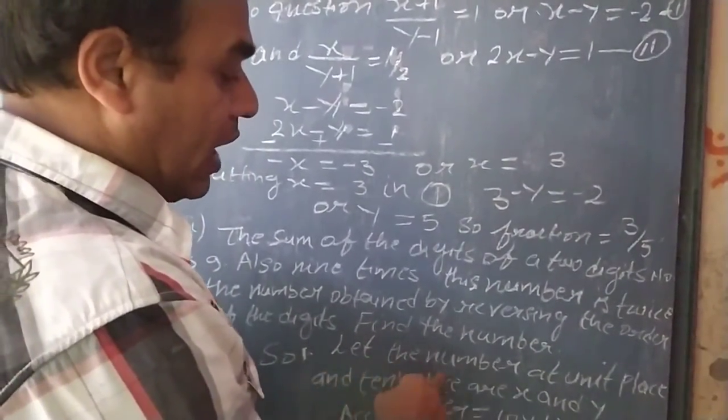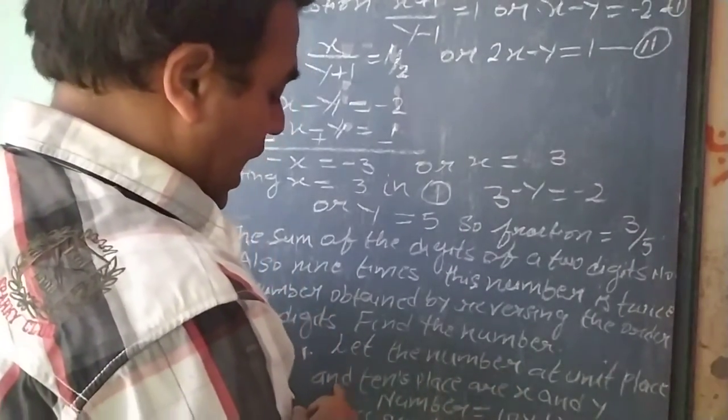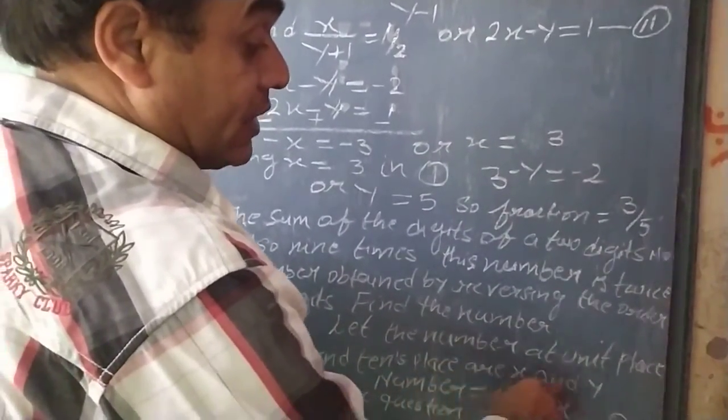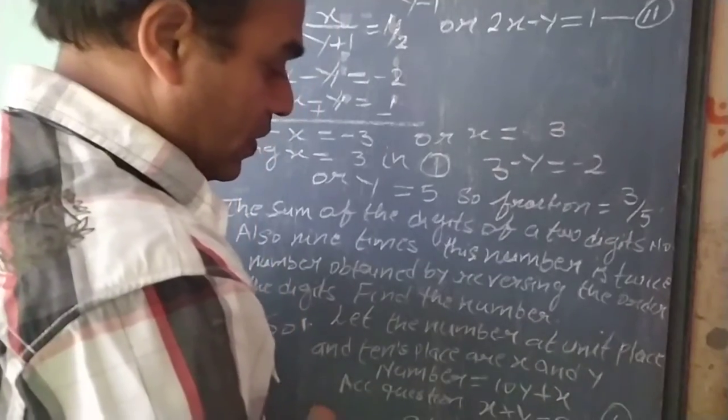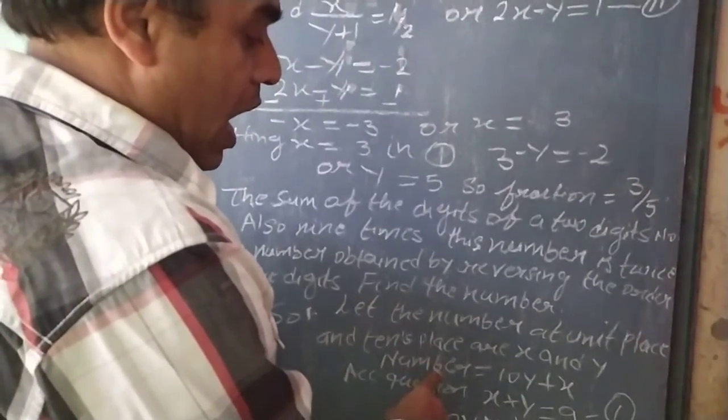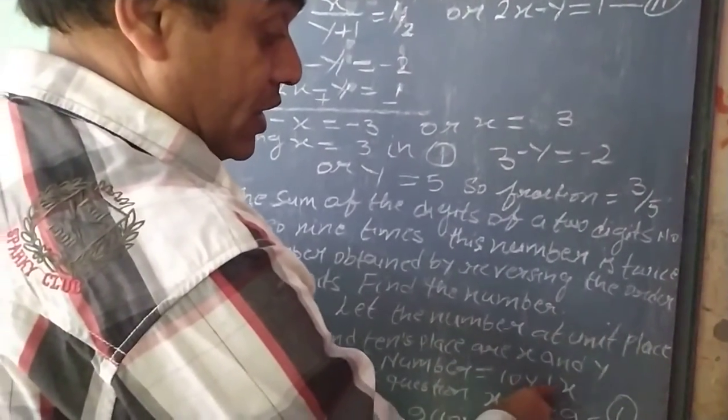Solution: let the number at the unit place and 10 place, r, x and y respectively. So number r, that is 10y plus x.